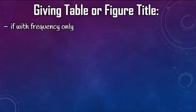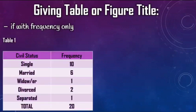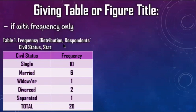If with frequency only — for those below 30 cases — a table looks like this. You can give it a title on top of the table, for example: Table 1, frequency distribution, respondents' civil status.